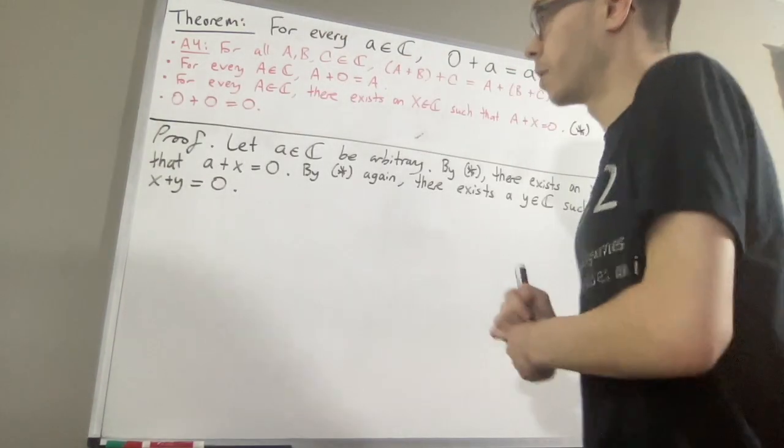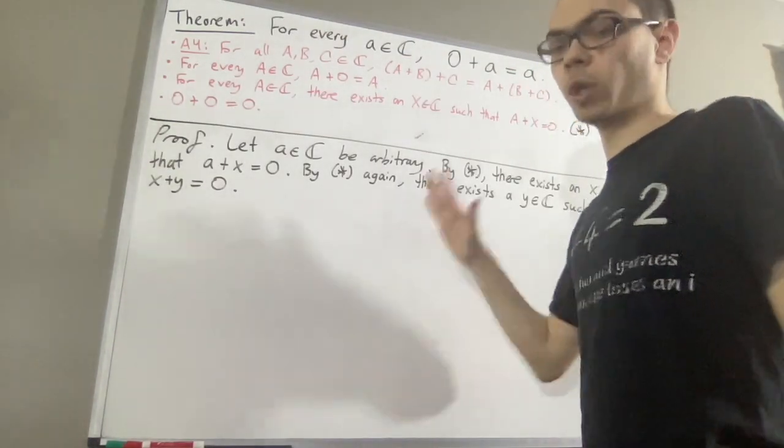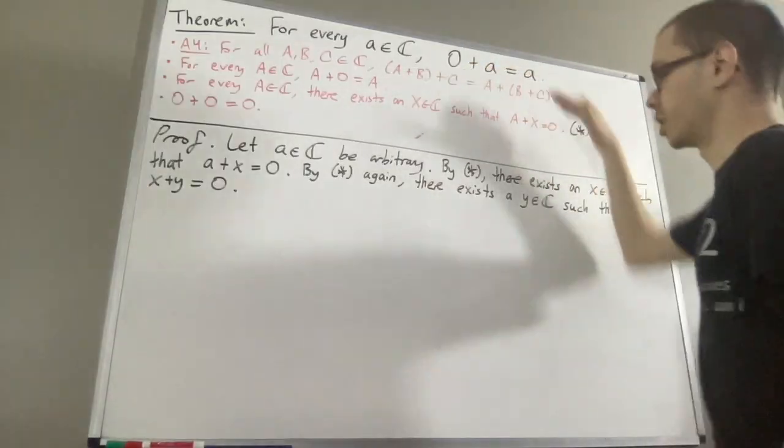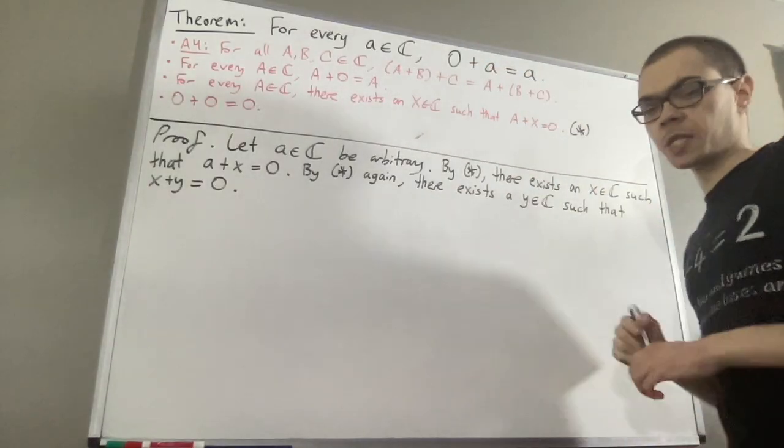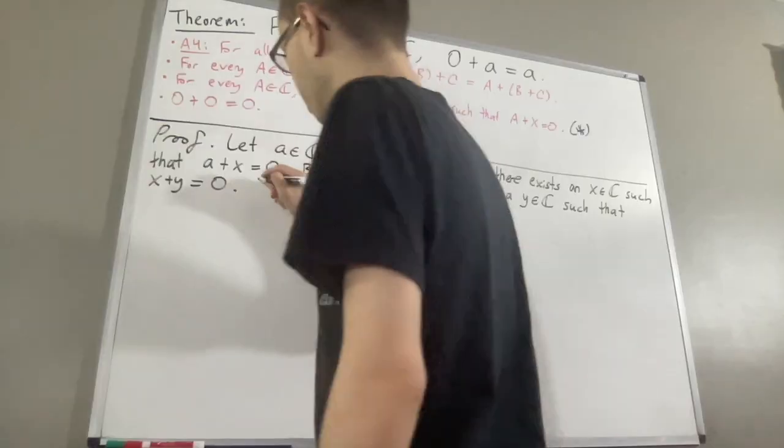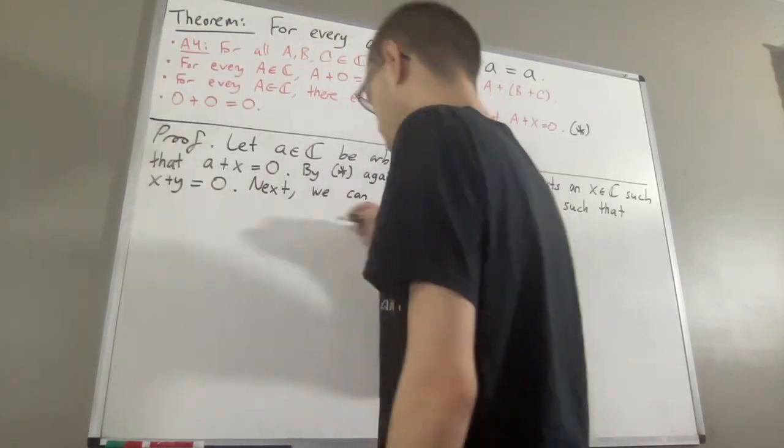And now, turns out, we can establish a long chain of equalities showing that 0 plus a is equal to a. The observation is as follows.